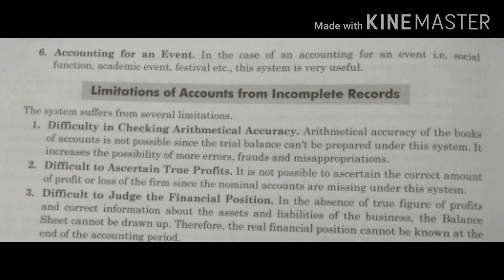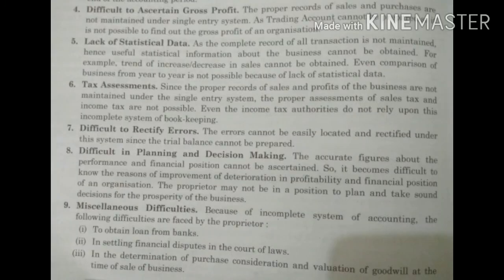Second limitation is difficulty to ascertain true profits: जब हमने सारी information record नहीं की और nominal account को बिल्कुल ignore कर दिया, तो सही profit calculate करना possible नहीं है। Third limitation is difficulty to judge financial position: financial position पता लगती है balance sheet से, लेकिन इस chapter में हम पढ़ेंगे कि company balance sheet maintain नहीं करती और दूसरे formats follow करती है। So company को अपनी financial position के बारे में नहीं पता लगता। Fourth limitation is difficulty to ascertain gross profit: incomplete records में sales और purchases का proper record नहीं होता, trading account नहीं बनाते, इसलिए gross profit भी नहीं पता लग सकता।